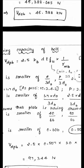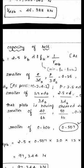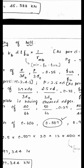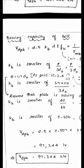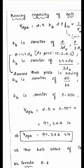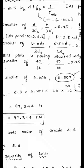Substituting into the bearing capacity formula: V_DPP = 2.5 × 0.507 × 20 × 12 × 400 × (1 / 1.25) = 97.344 kN. The bolt value is the least of shear capacity and bearing capacity: minimum of 45.38 kN and 97.344 kN = 45.38 kN. This is the bolt value for grade 4.6.